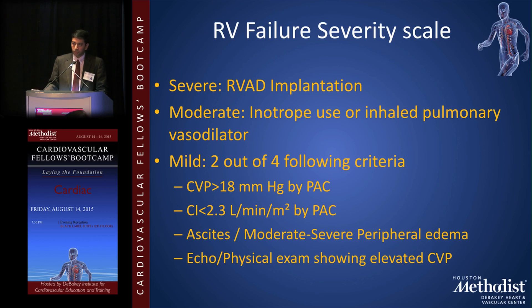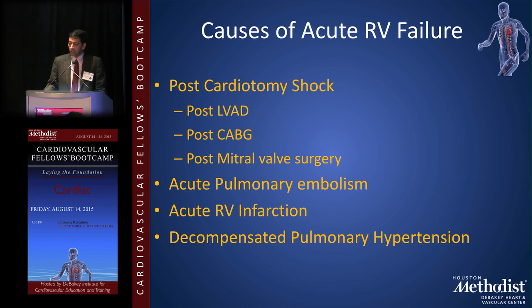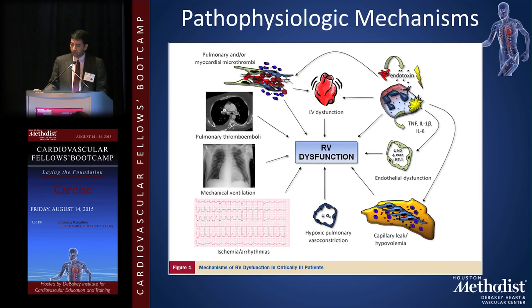RV failure can be graded as severe — requiring RV mechanical support; moderate — requiring inotropes or inhaled pulmonary vasodilators; or mild — manageable with diuretics alone. Causes of acute RV failure include post-cardiotomy shock, post-CABG, post-LVAD, post-mitral valve surgery, acute pulmonary embolism, acute RV infarction, and decompensated pulmonary hypertension.